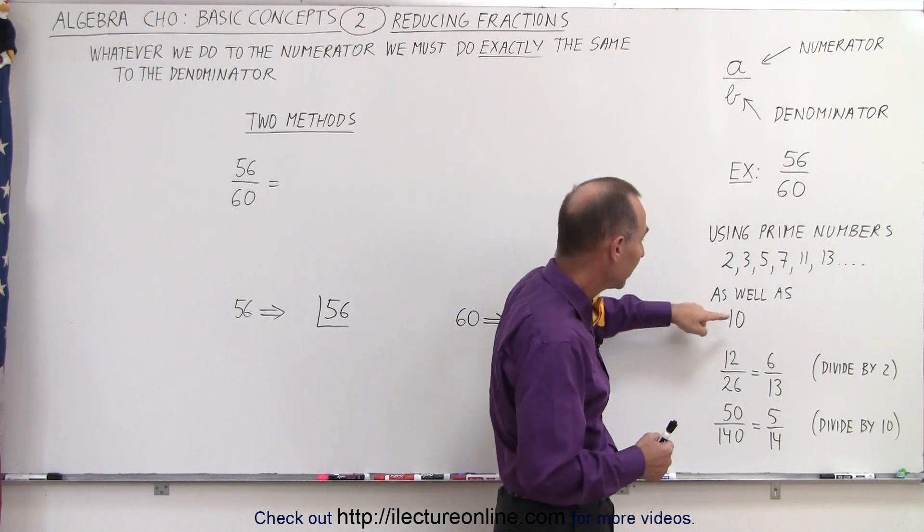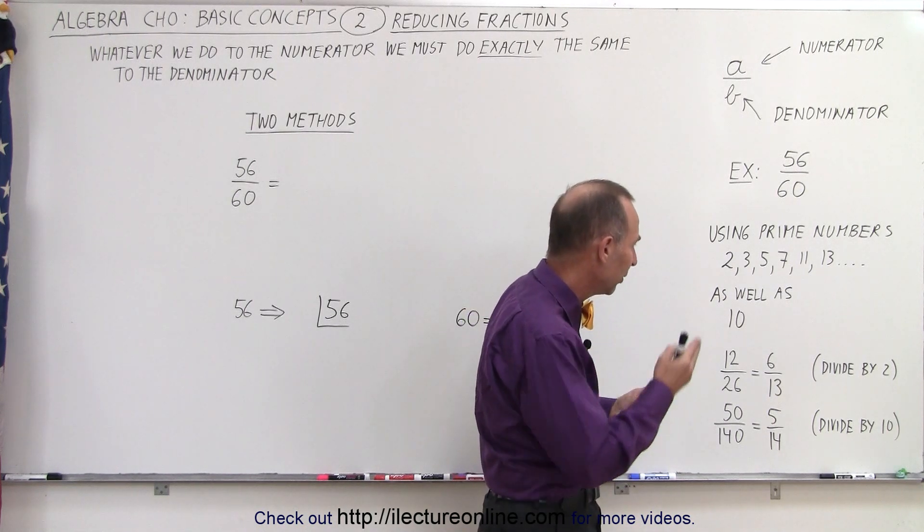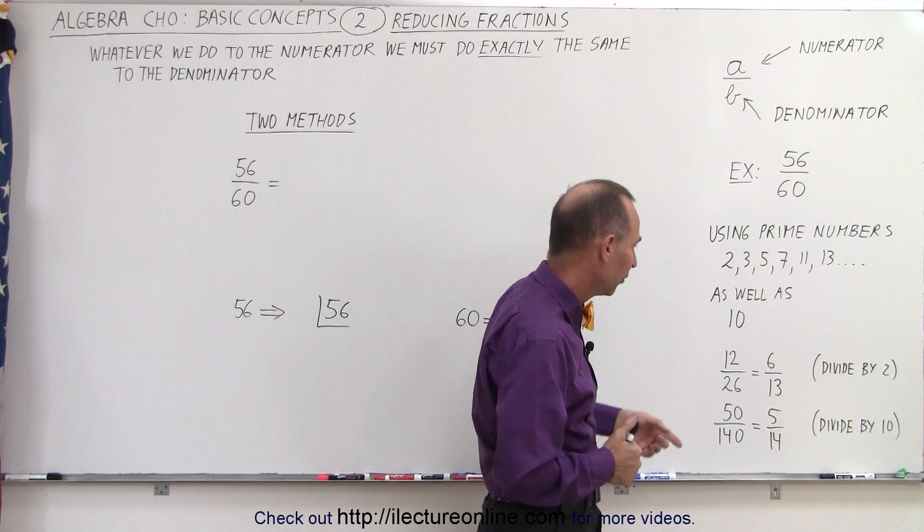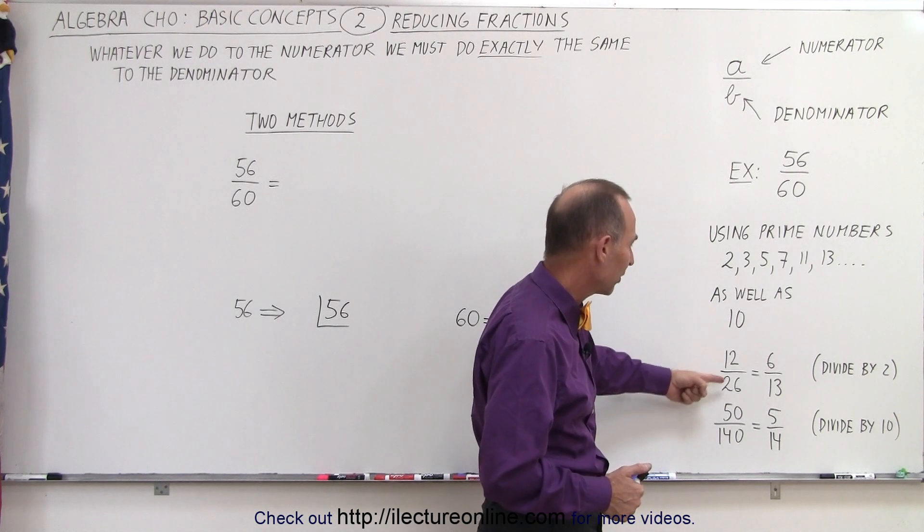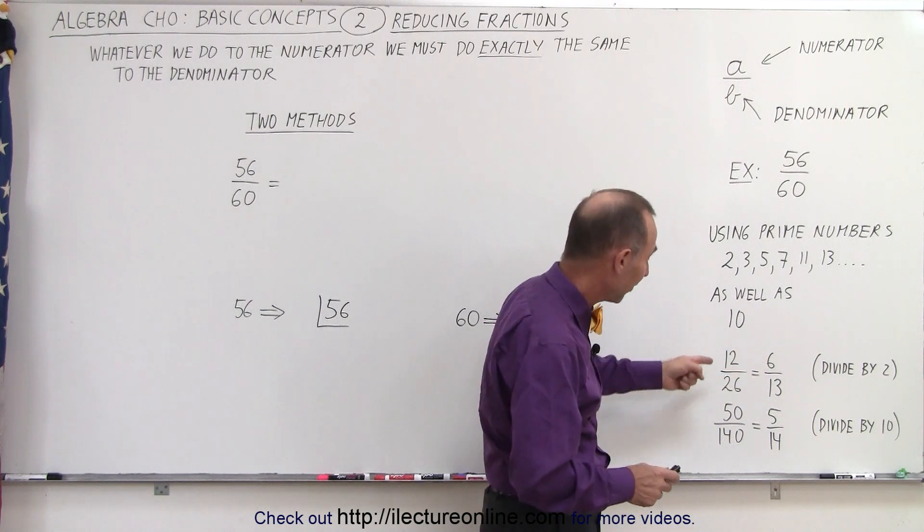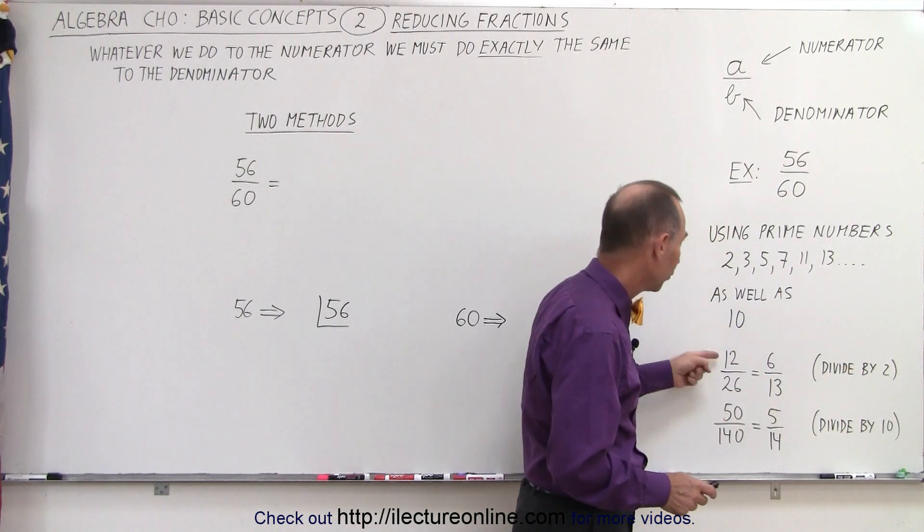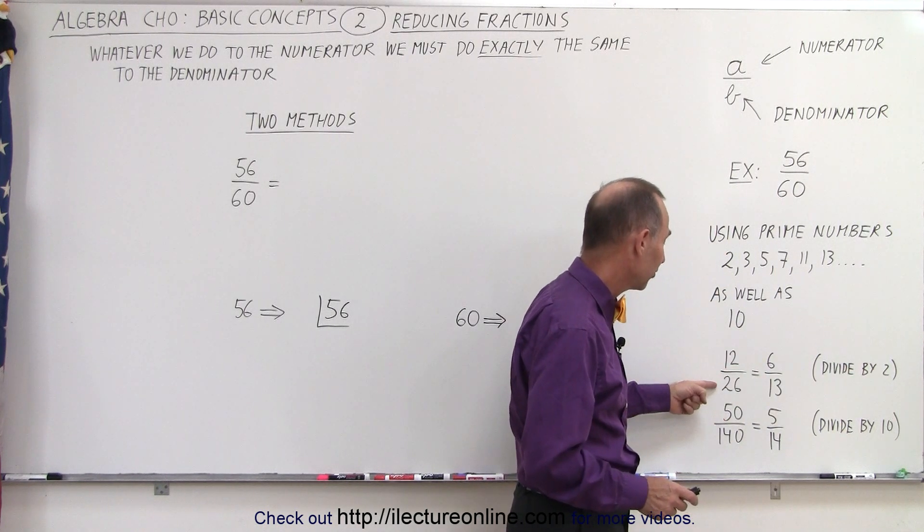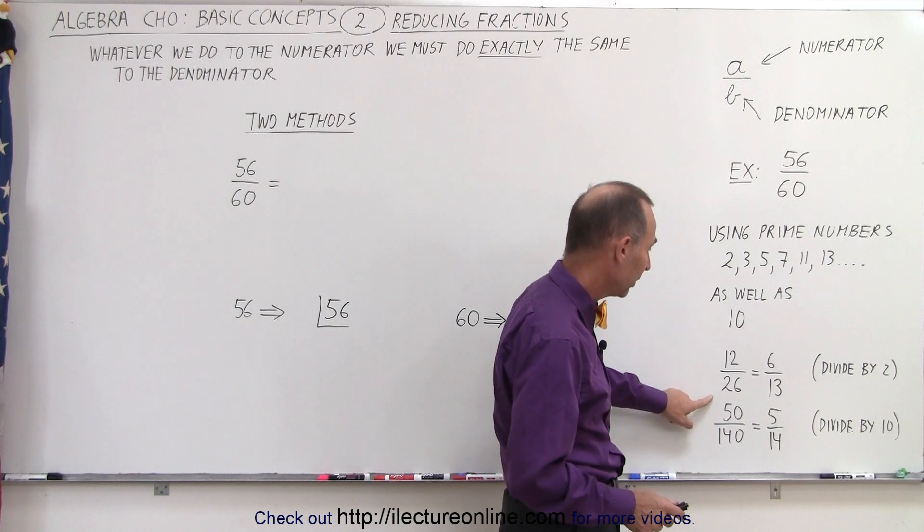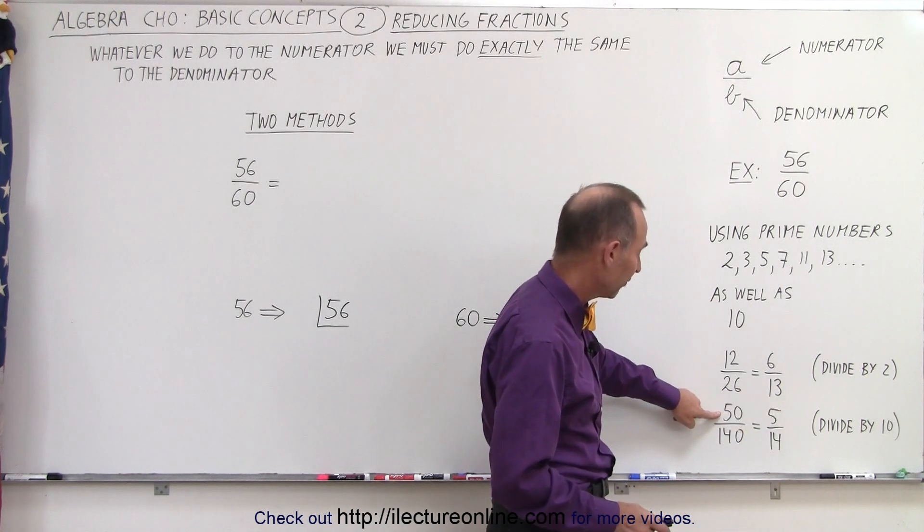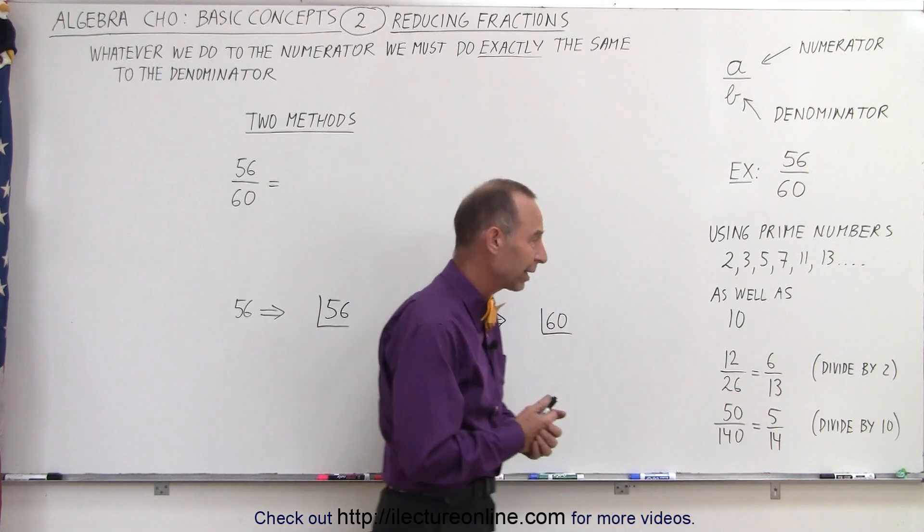But if they do, we can then go ahead and simplify them by dividing both the numerator and the denominator by 10, simply reducing the number of zeros. So some simple examples here: 12 divided by 26 can be written as 6 divided by 13 by dividing both the numerator and the denominator by the first prime number, 2. So 12 divided by 2 is 6, 26 divided by 2 is 13. Or in the case where both numbers end in 0, they can both be divided by 10. The numerator divided by 10 is 5, the denominator divided by 10 is 14.